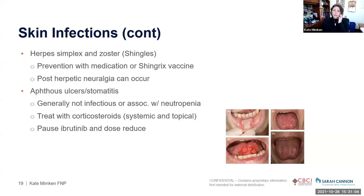Oral lesions called stomatitis or aphthous ulcers can erupt from a weakened immune system and are not always associated with infection or neutropenia. They are treated with systemic or oral rinse steroids as well as pain medication — both in pill form and topically. Sometimes ibrutinib must be held and the dose reduced if the condition is severe. Some patients require hospitalization because pain makes adequate nutrition impossible.